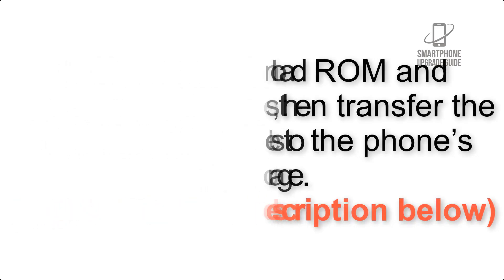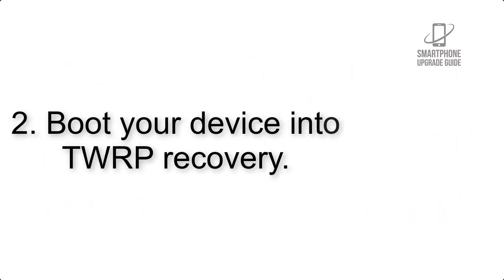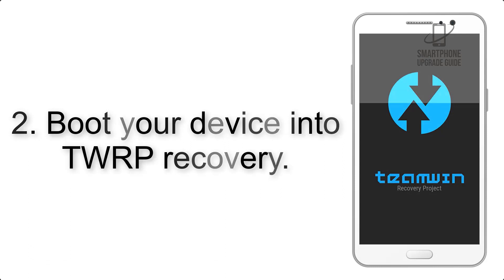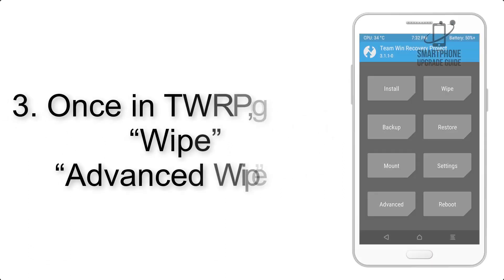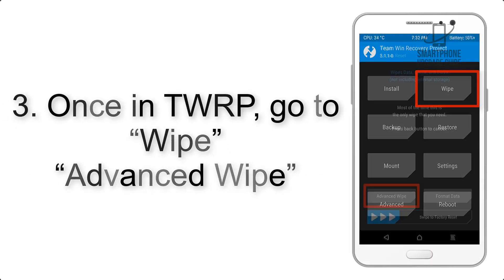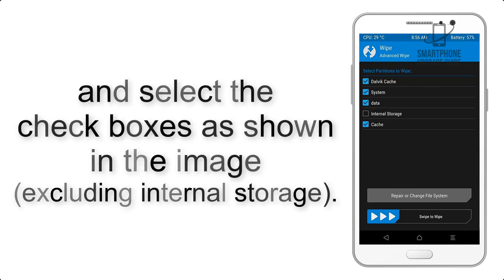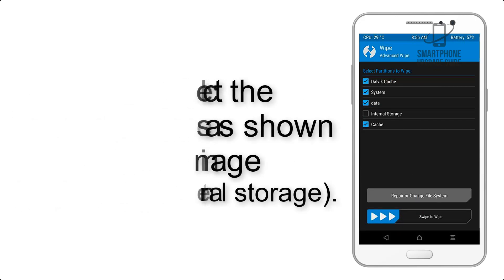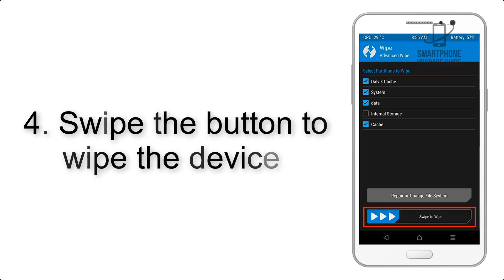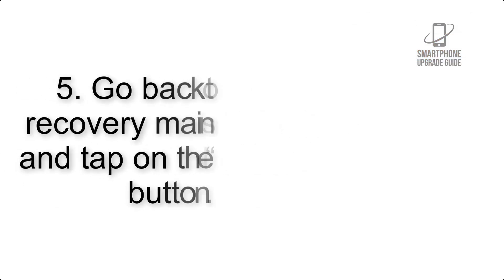Step 2: boot your device into TWRP recovery. Once in TWRP, click on Wipe, then Advanced Wipe, and select the checkboxes as shown in the image, excluding internal storage. Step 4: swipe the button to wipe the device.